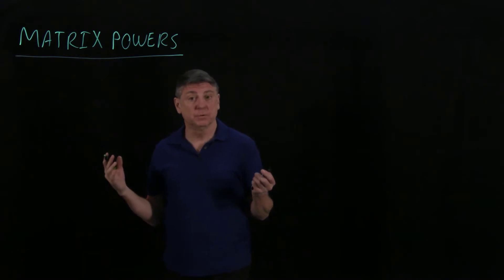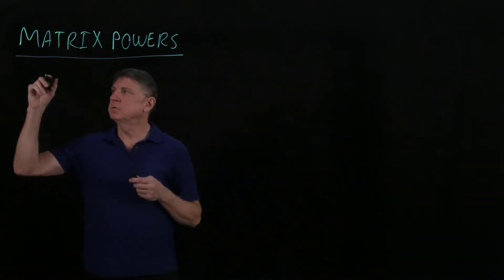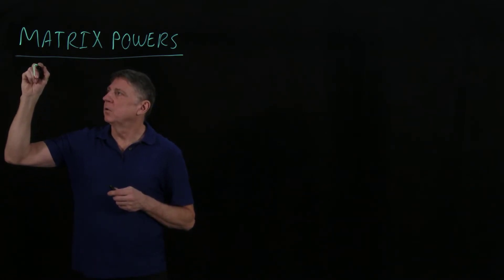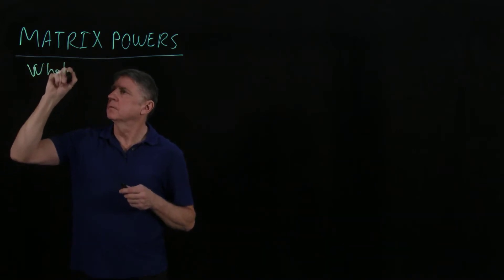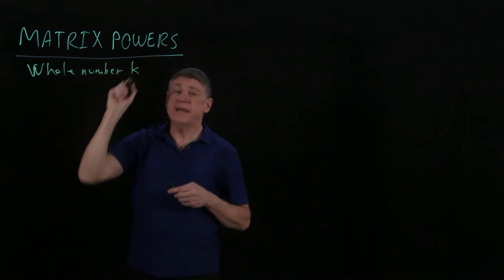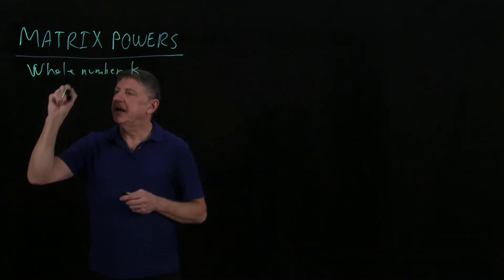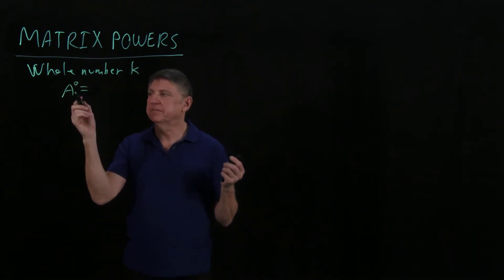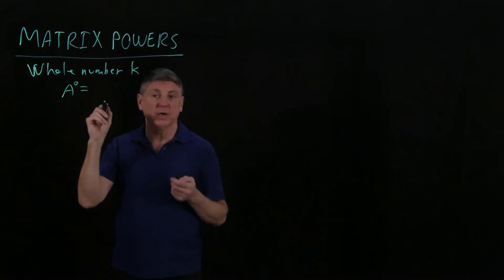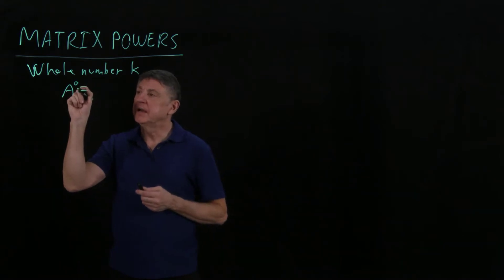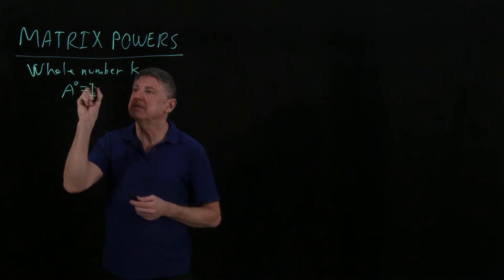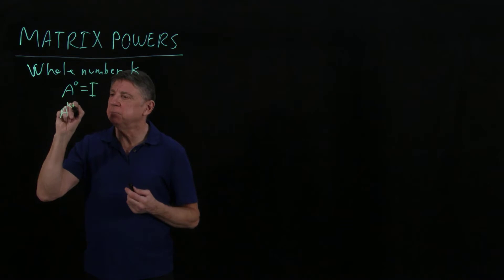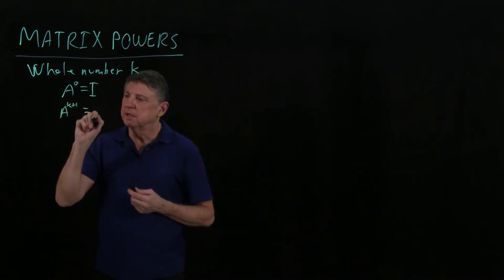Powers in the sense of whole numbers are easily defined. Suppose we have a whole number k. We can say that A to the zero power — just as a real number to the zero is one — in the case of a matrix we define A to the zero as I, the identity.